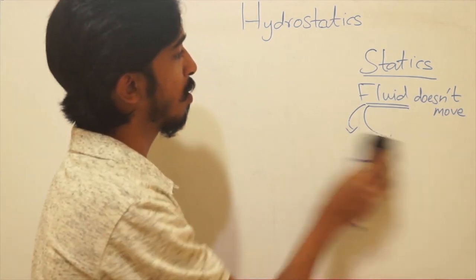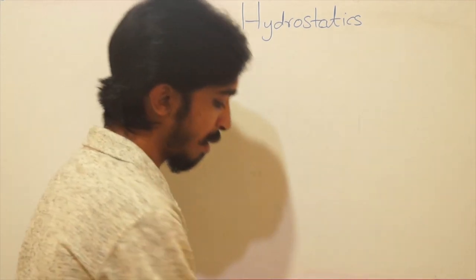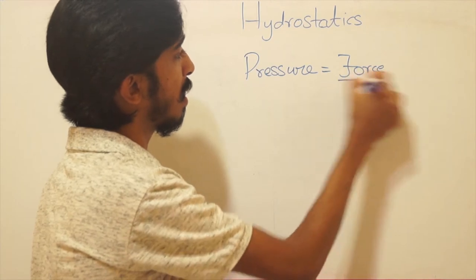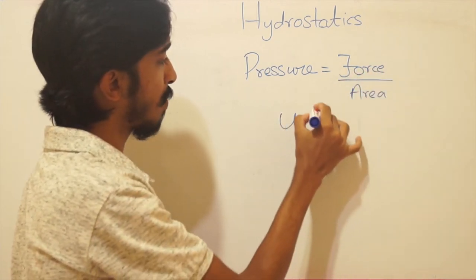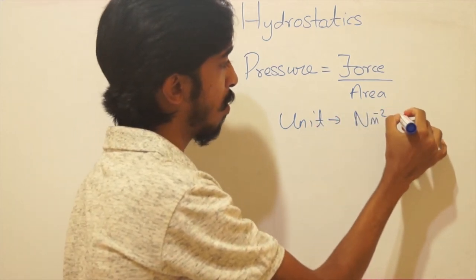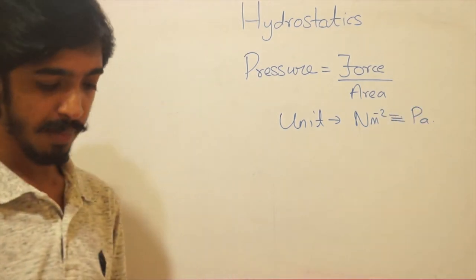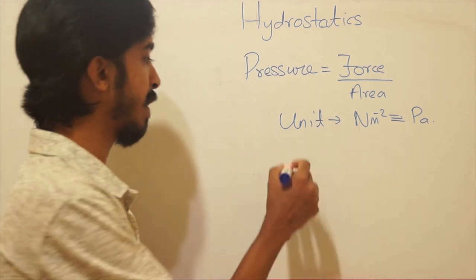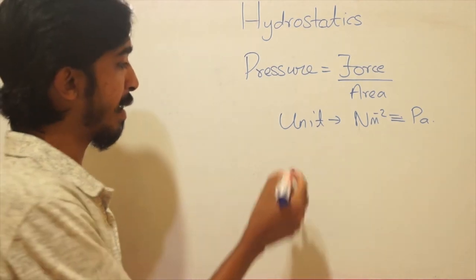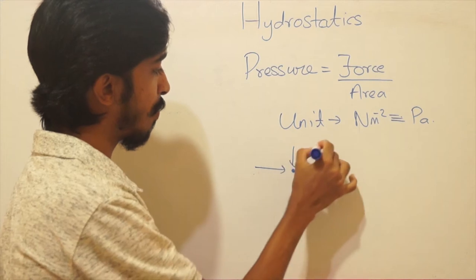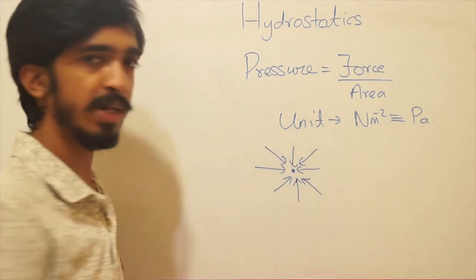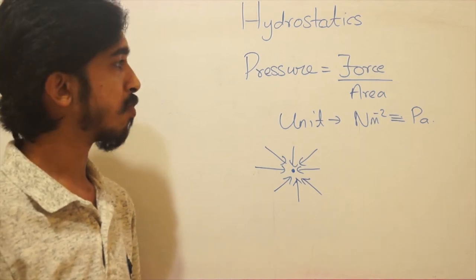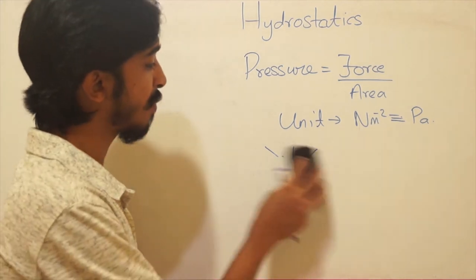The next major quantity in hydrostatics is pressure. Pressure is force divided by area, and its unit is the Pascal. Generally, pressure doesn't have a particular direction — when you take a point in air open to the atmosphere, pressure acts in every direction. So pressure is a scalar quantity, though when resolving forces on certain objects there can be a resultant pressure.